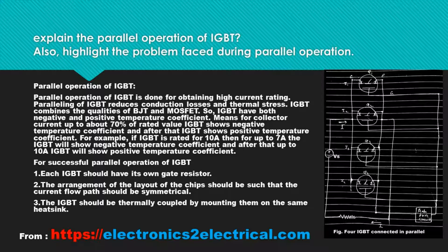IGBT combines the qualities of BJT and MOSFET, so IGBT has both negative and positive temperature coefficient. For collector current up to about 70% of rated value, IGBT shows negative temperature coefficient, and after that IGBT shows positive temperature coefficient. For example, if IGBT is rated for 10A, then for up to 7A the IGBT will show negative temperature coefficient, and after that up to 10A IGBT will show positive temperature coefficient.